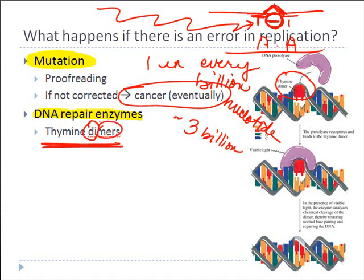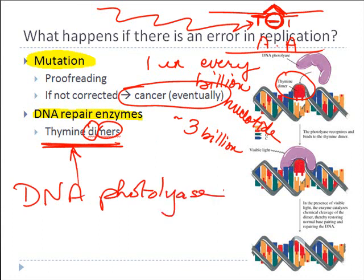'Di' means two, 'mer' means those subunits — in this case nucleotides paired together — so a dimer is two nucleotides paired together, in this case two thymine nucleotides. There is a special enzyme called DNA photolyase whose job it is to go in and cut out where that thymine dimer is, and help repair back to having just two individual thymine nucleotides properly hydrogen bonded to the adenines on the opposite DNA strand.